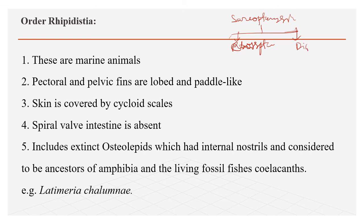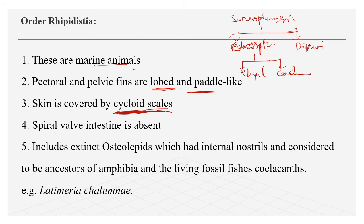Crossopterygii is divided into Rhipidistia and Coelacanthini. Pectoral and pelvic fins are lobe-like. Skin is covered with cycloid scales. Spiral valve is absent in Crossopterygii, whereas it is present in cartilaginous fishes. Osteolipid fishes are now extinct. Internal nostrils are present. Osteolipids are considered to be the ancestors of amphibians.